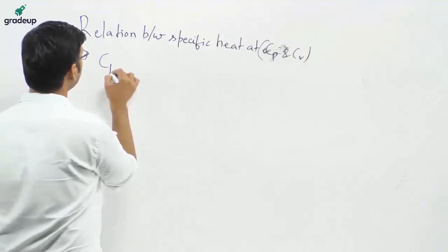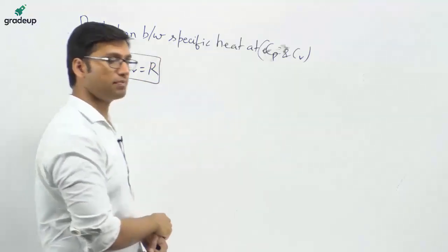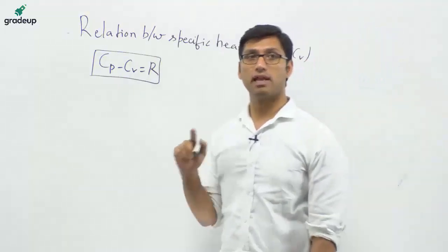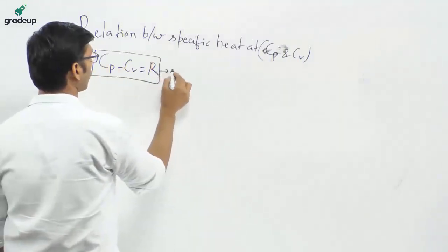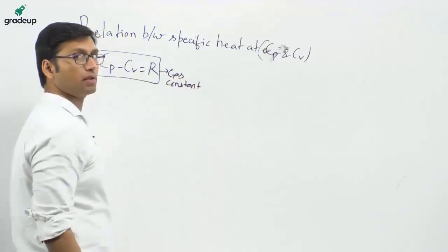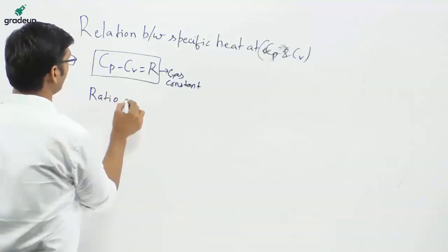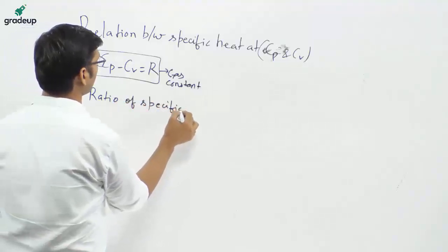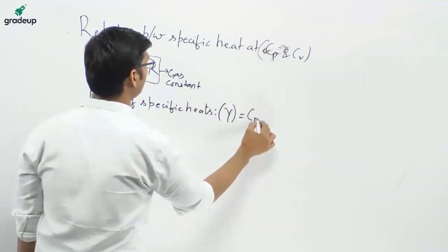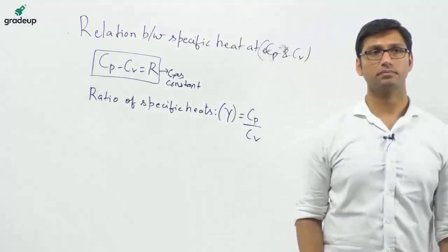Cp minus Cv is equal to R. This is one important relation — the difference of specific heats at constant pressure and constant volume is equal to the gas constant R. Next is the ratio of specific heat, given by gamma (γ), which is equal to Cp over Cv. These are very, very important relations.